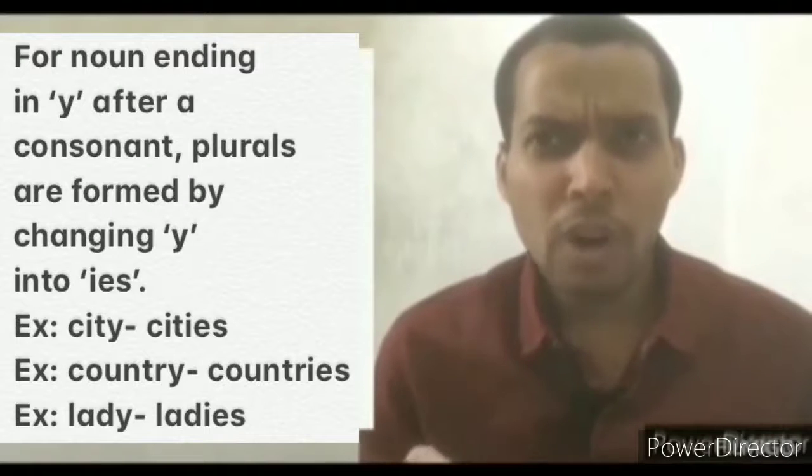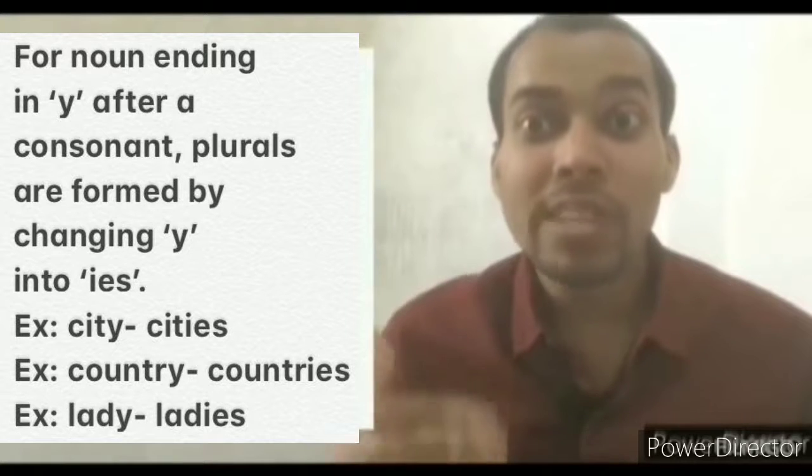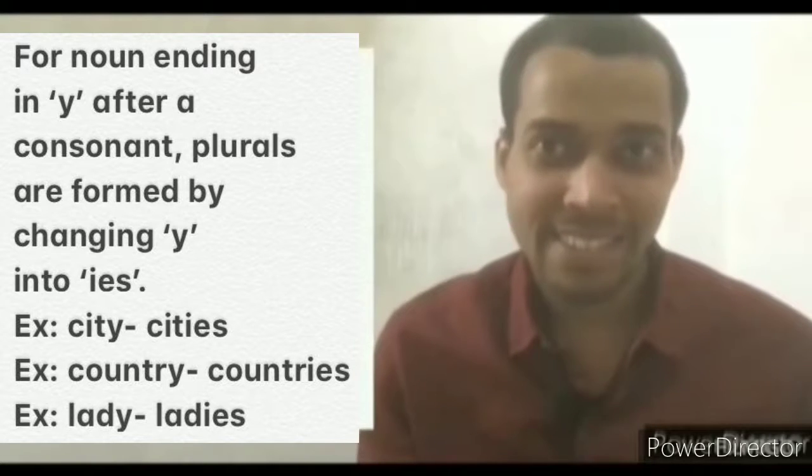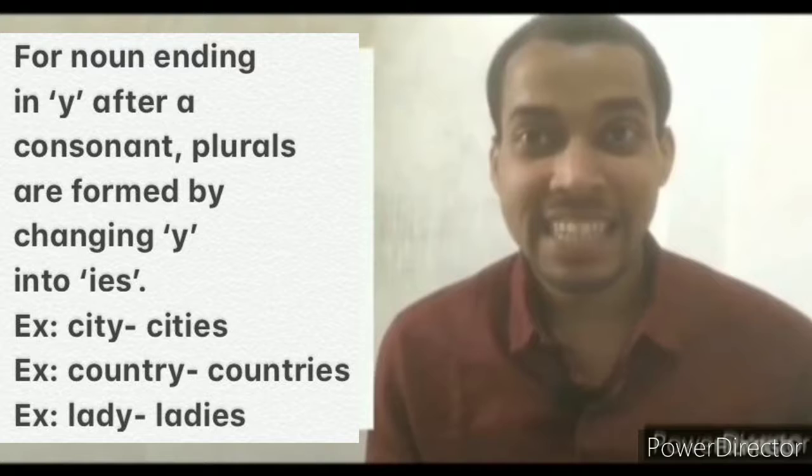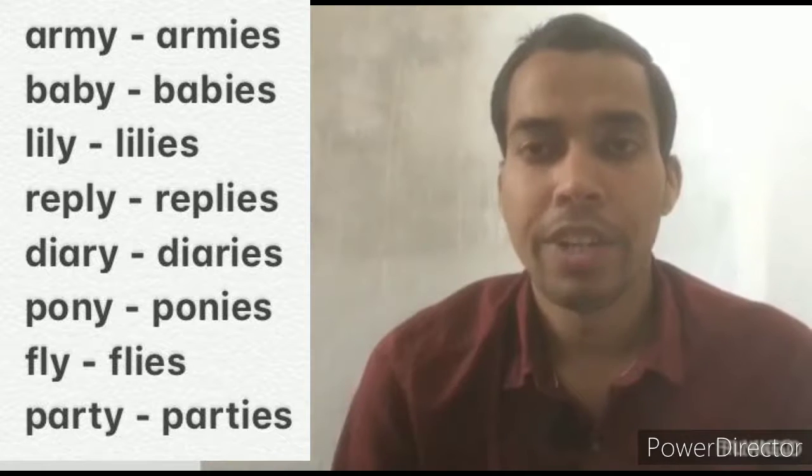For nouns ending in Y after a consonant, plurals are formed by changing Y into IES. For example, city - cities, country - countries, lady - ladies, army - armies, baby - babies, lily - lilies, reply - replies, diary - diaries, pony - ponies, fly - flies, party - parties.